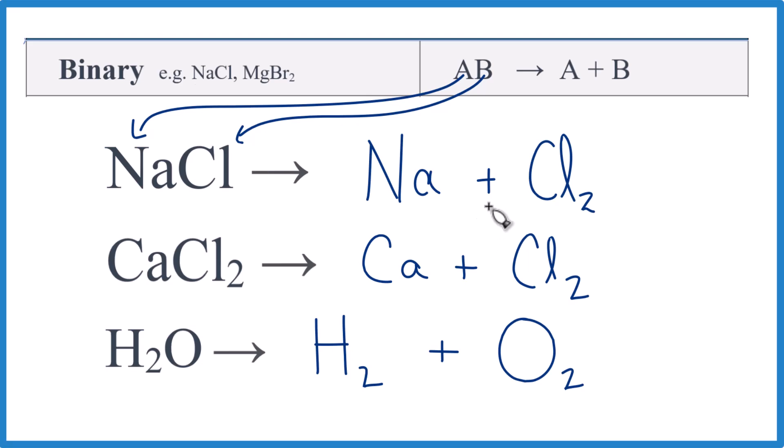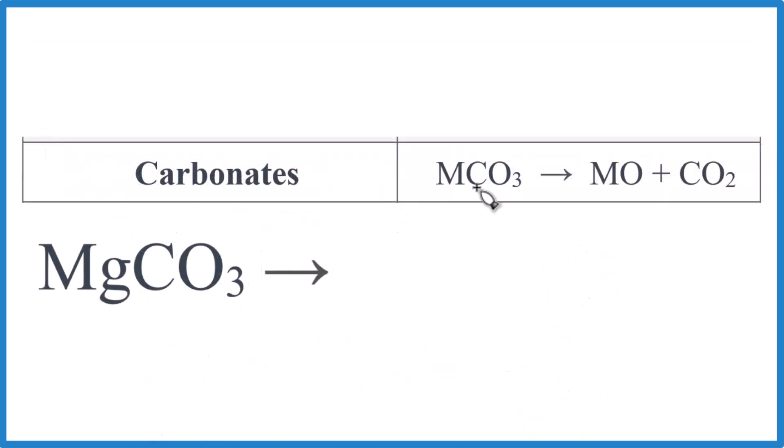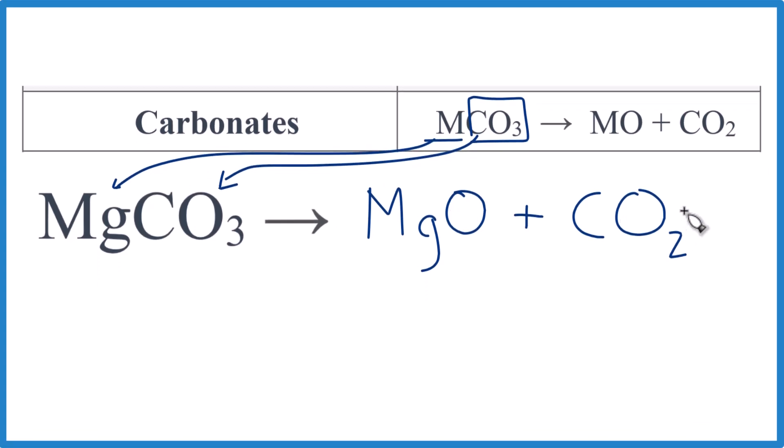Okay, let's try our next category. For carbonates, we have the metal, that's the Mg here, and CO3. This is the carbonate. It is a polyatomic ion. So when this breaks down, we get the metal, that's the Mg, plus oxygen. So MgO, and then we have carbon dioxide with that. So carbonates, they break down into the metal oxide and carbon dioxide.